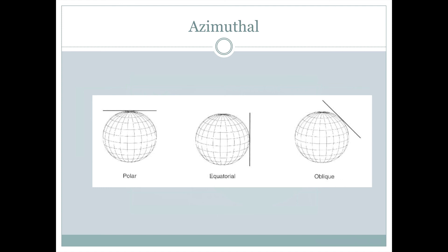The azimuthal map projection basically takes a flat plane, lays it on the globe, and projects the globe directly onto the flat plane. If the flat plane is on the north pole or south pole, we call that a polar azimuthal map projection, which is the most typical form. But we could also have an azimuthal map projection at the equator — an equatorial azimuthal map projection — or anywhere in between, which would be an oblique azimuthal map projection.